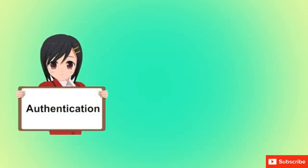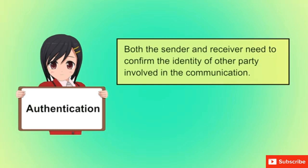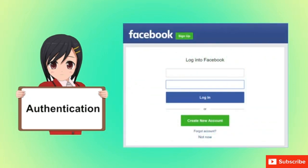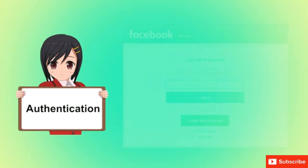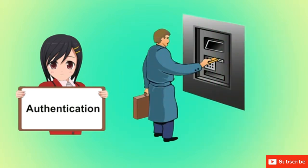Authentication is the process of verifying that the identified user is the real owner of his or her identity. For example, to access your Facebook account, you should enter a valid ID and password — these prove your authenticity. Another example: after swiping an ATM card, the user enters his secret PIN, and once entered, the user is authenticated to perform the desired transaction.